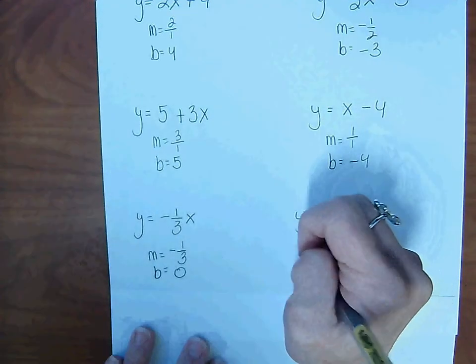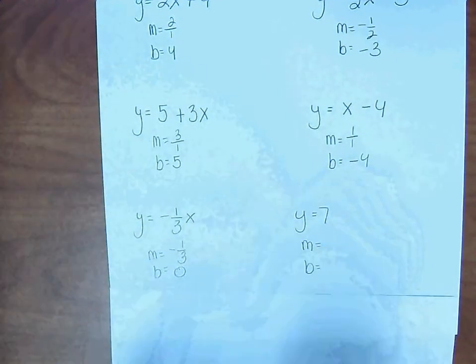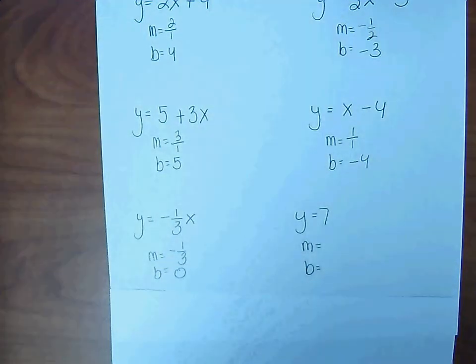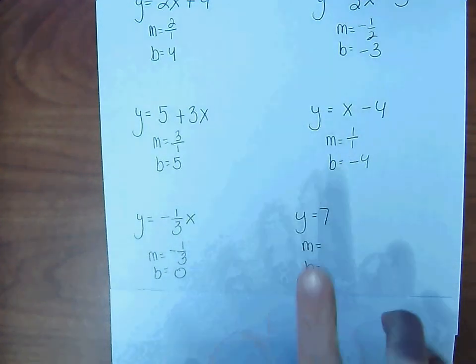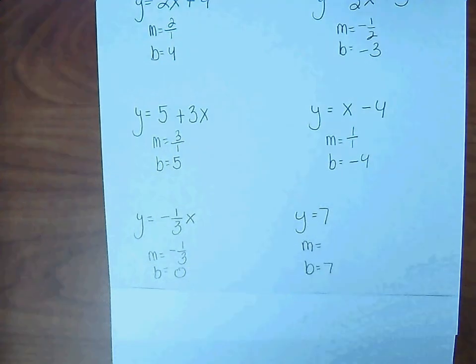And for our last one, y = 7. This one always confuses students. There is no mx term. So that tells you that 7 is going to be your y-intercept. The mx term disappeared.